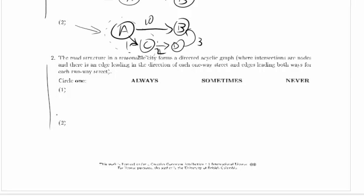We're solving true, false, or sometimes true and sometimes false questions. The road structure in a reasonable city forms a directed acyclic graph, where intersections are nodes and there's an edge heading the direction of each one-way street and edges leading both ways for each two-way street.